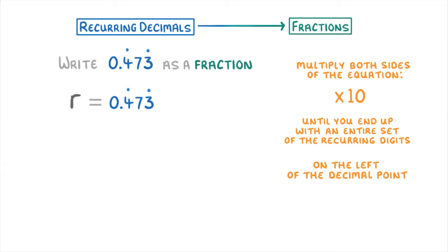So if we multiply it by 10 once we'll get 10r equals 4.734 recurring.